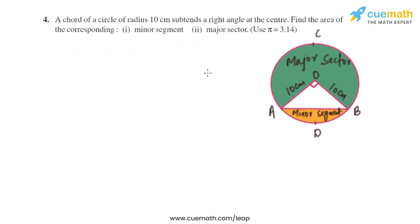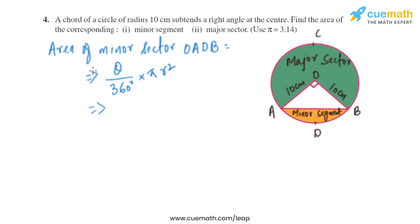Now we have to find the area of the minor segment. To do this, we find the area of the minor sector and then subtract the area of the triangle from it. This gives us the area of the minor segment, shown in yellow.